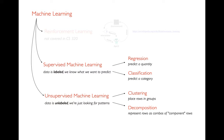In unsupervised learning, there is no special label column that we're trying to predict. We're just trying to look for general patterns in the data. We might try to cluster our data, placing rows into different groups. Or we might try to decompose our rows — we might notice that rows, each with five numbers in them, are really just combinations of a couple of component rows, so there's some simplicity even when there are a lot of columns.